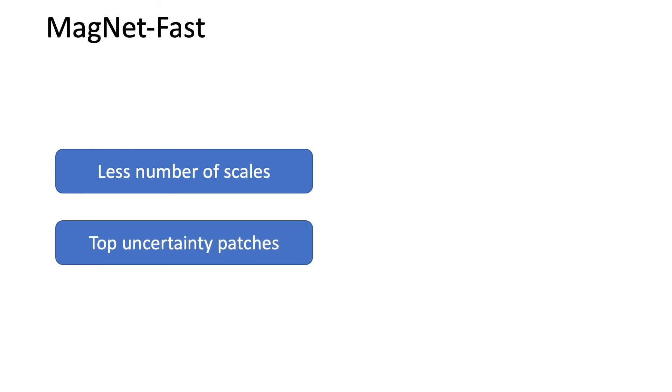We propose another fast version of Magnet named Magnet Fast which runs on a smaller number of patches. Magnet Fast refines on fewer number of scales and top uncertainty patches. Therefore, the number of patches processed by Magnet Fast is smaller than this number in the patch processing approach.